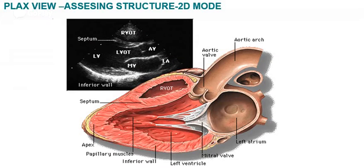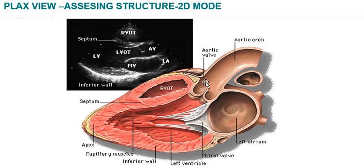In the cross-section of the parasternal long axis view, the echo beam passes through the left ventricle from anterior to posterior. The structures visualized are: the right ventricular free wall, the right ventricular cavity, the interventricular septum, the left ventricular cavity, the papillary muscles, the chordae tendineae, the mitral valve, the aortic valve, the ascending aorta, and the left atrium. Sometimes the descending aorta is also seen, along with the posterior wall of the left ventricle and the pericardium. Pericardial fluid may be visible if there is a pericardial effusion.